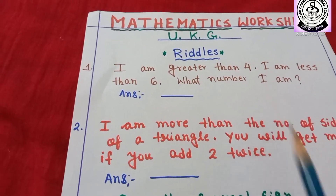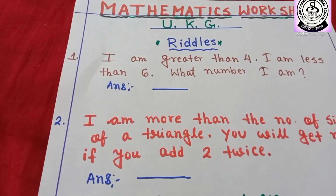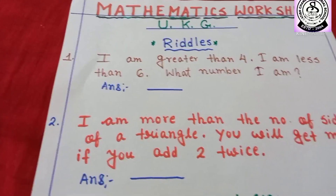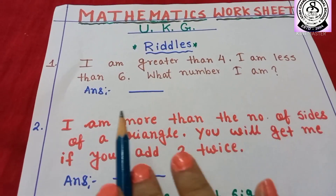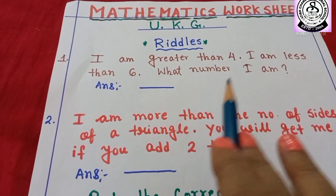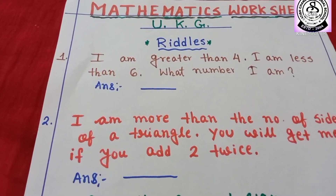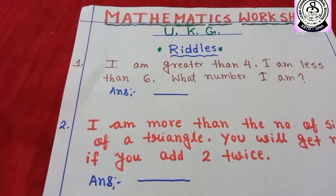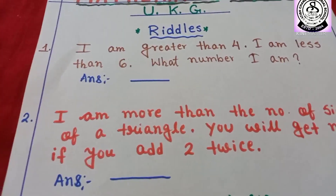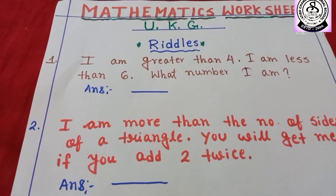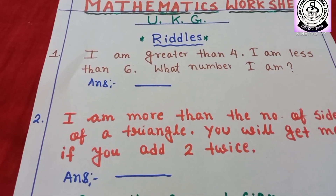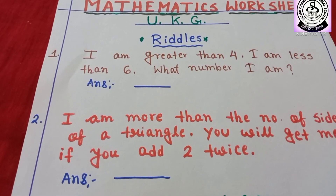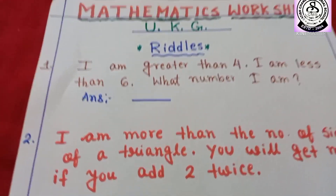I am greater than 4. Greater than means always a bigger number — after the number. And I am less than 6. So what number am I? I am greater than 4, that means after 4. And I am less than 6, that means before 6. So what number am I? Yes — 5.